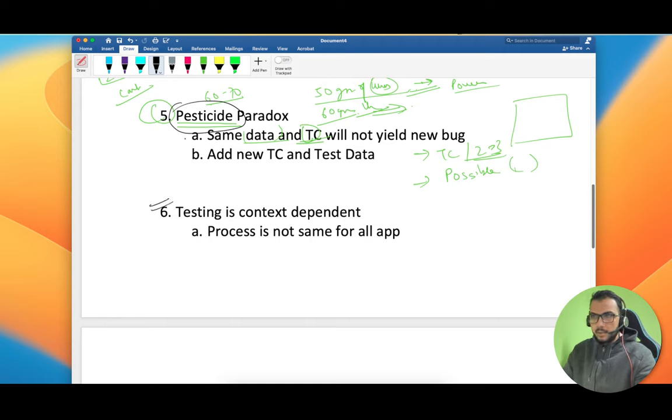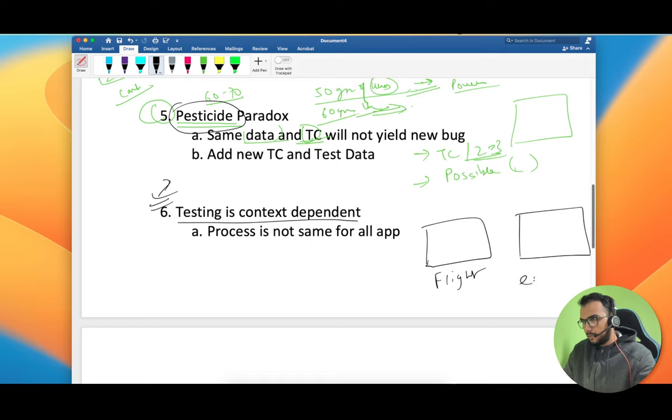This thing is also related to the pesticide paradox: testing is context dependent. Let's say there is an app for flight and there is an app for e-commerce. You are not going to test the same applications based on the same type of test cases for flight or maybe for tourism industry.